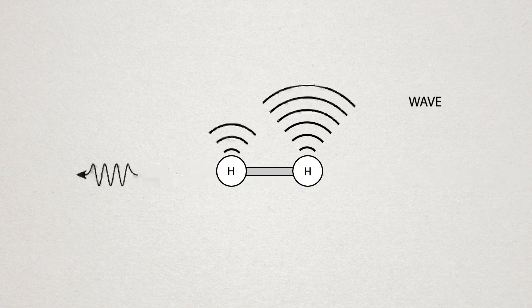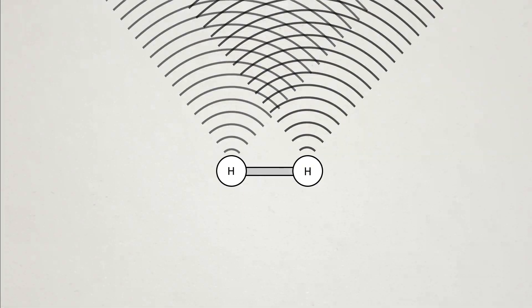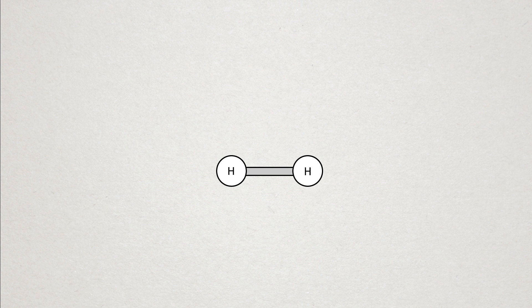They then measured how long it took for each of these electrons to escape through measuring an interference pattern.